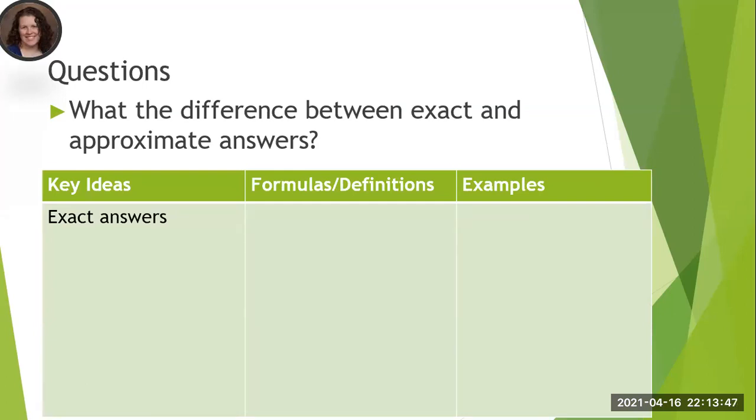So what is the difference? Well, exact answers mean there's no uncertainty in the answer. Generally, there's no decimals. So for example, pi.